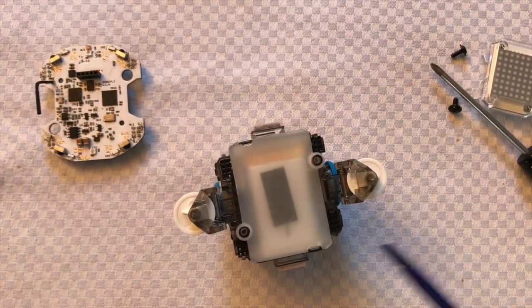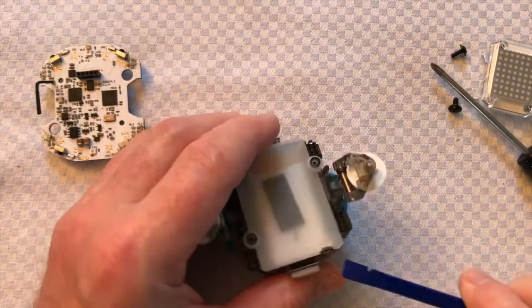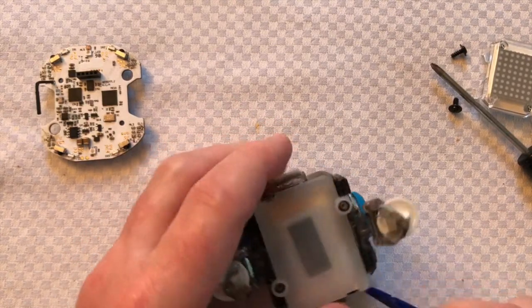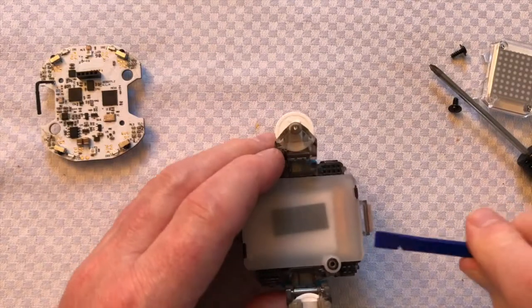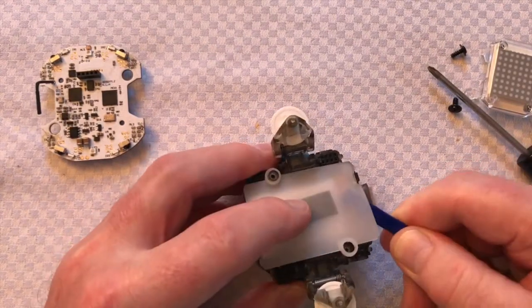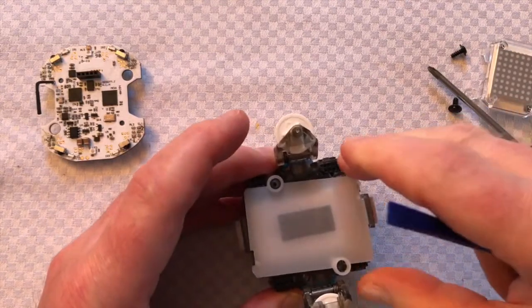Underneath there we've got a plastic panel, so again get a piece of plastic and get that underneath the panel and twist at both ends and twist.